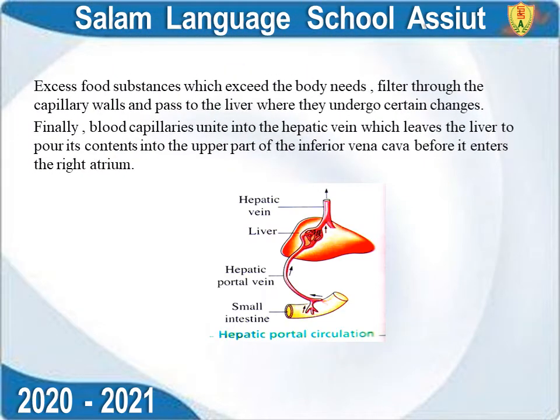Excess food substances which exceed the body's needs are filtered through the capillary walls and passed to the liver, where they undergo certain changes — for example, excess glucose is converted to glycogen and stored in the liver.